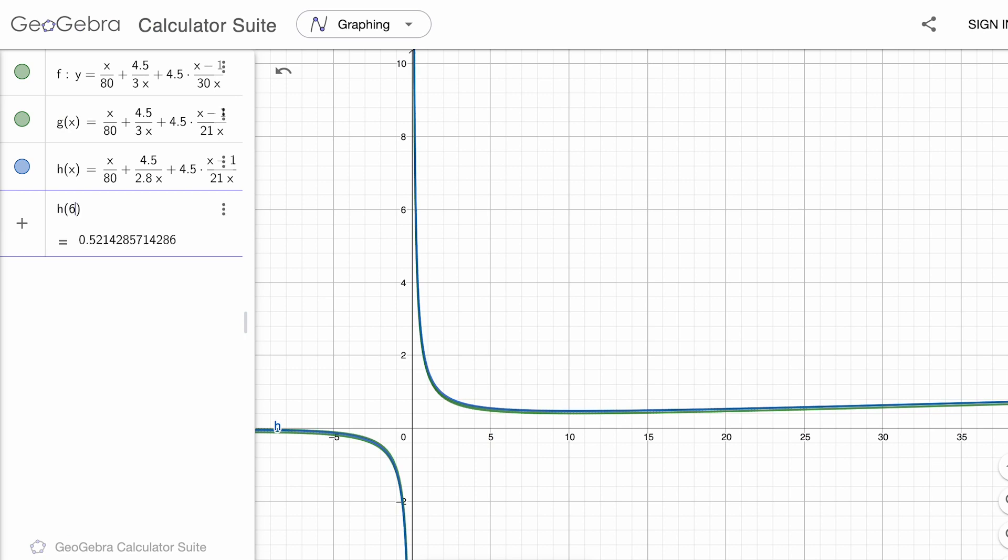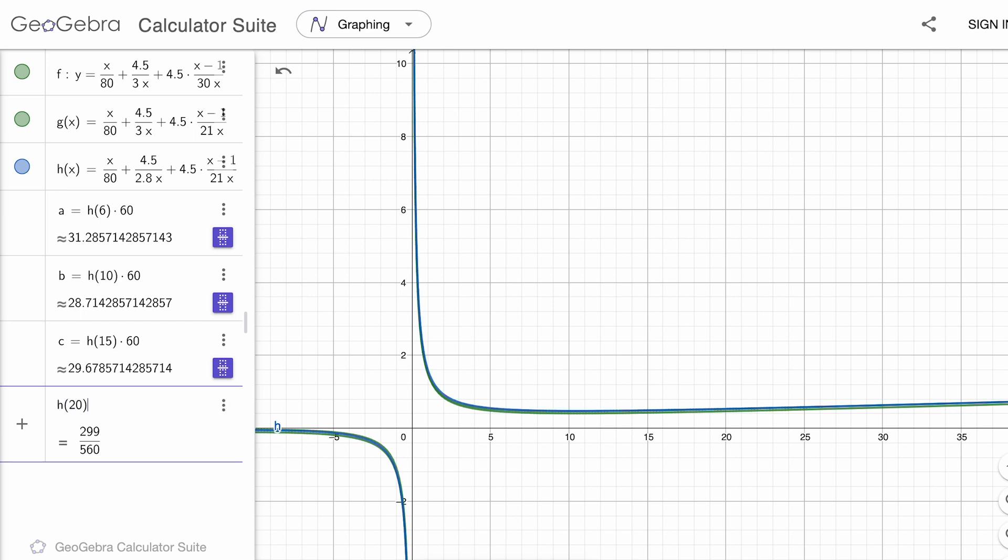Also notice that according to our model the amount of time for travel across town doesn't change much whether you have seven stops or 16 stops. So there is a lot of flexibility for the engineers to adapt the number of stops to the particular needs for any stretch of road. This flexibility is one of the key findings from our model.